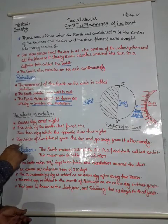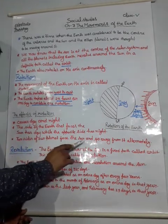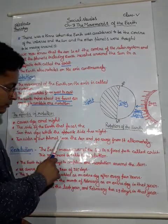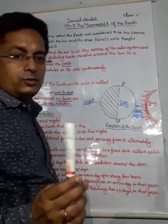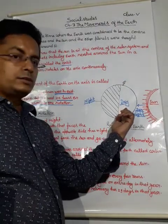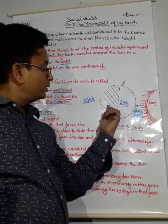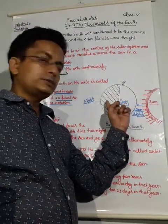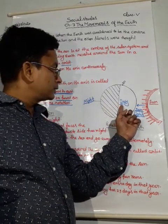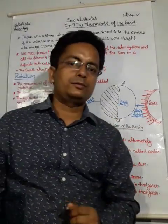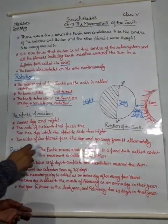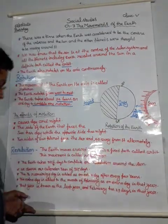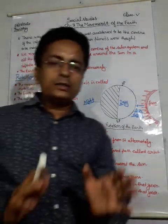Two sides of our planet face the Sun and go away from it alternately. As one side faces the Sun first, and then the next time the earth rotates, the other side comes to face it. So two sides of our planet face the Sun and go away from it alternately.